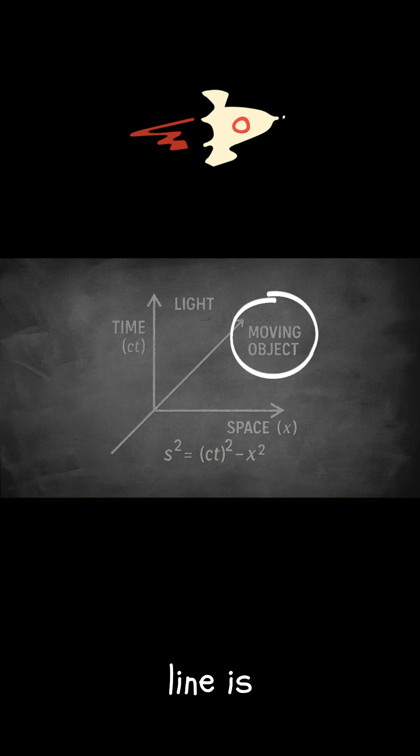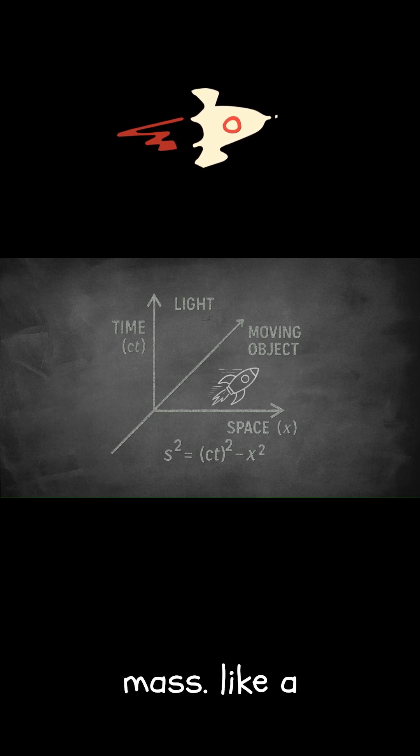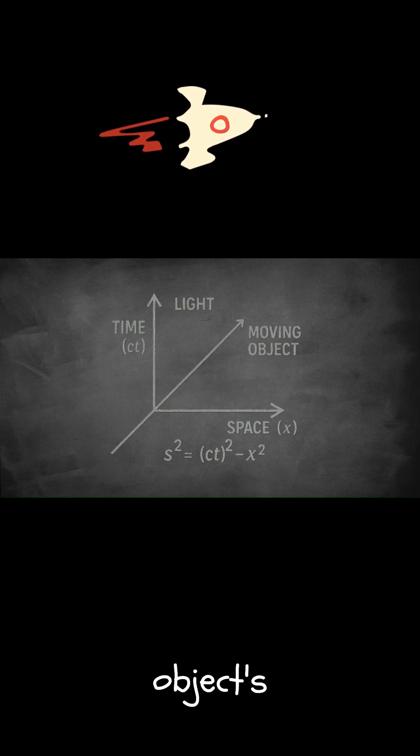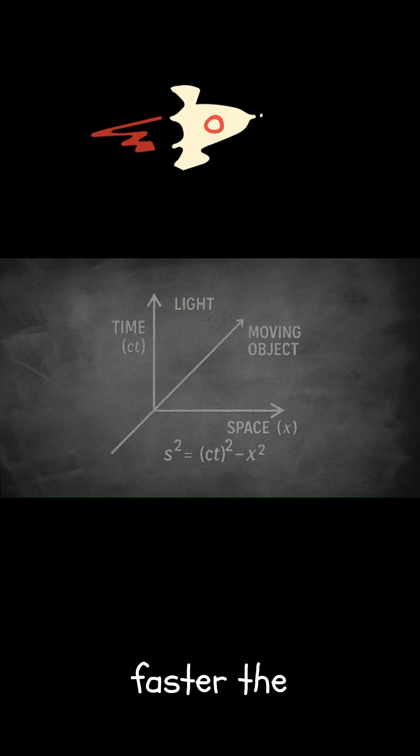The space below the diagonal line is labeled moving object. This represents something with mass, like a spaceship moving through both space and time. The closer the object's trajectory is to the line, the slower the motion through space, and the faster the passage of time.